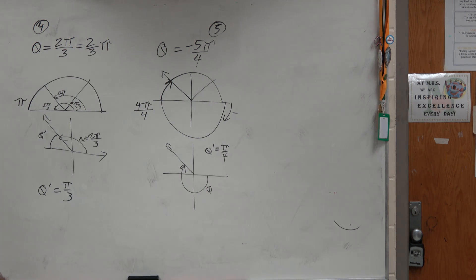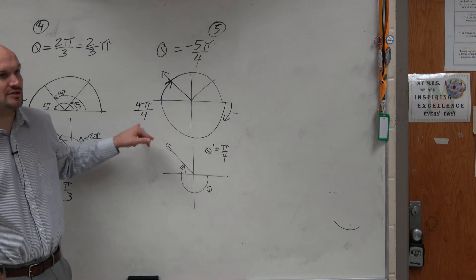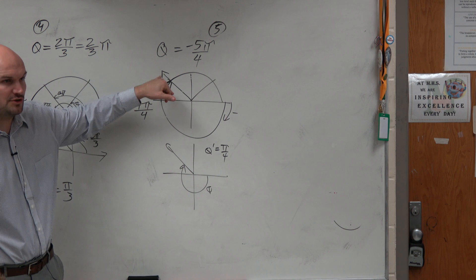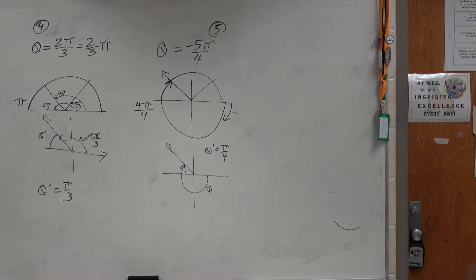Yes? Isn't 4π over 4 just π? Yep. So I'm just using it as a counting measure. So you can see 4π over 4 to go extra π over 4 would just be 5π over 4. So I just use it for that. You could keep it as π if you want.